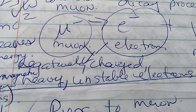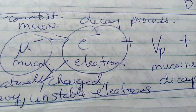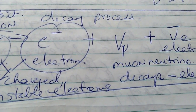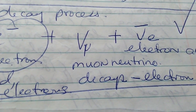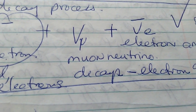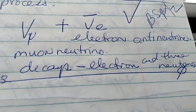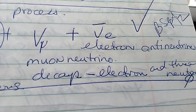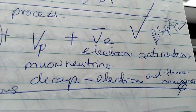Negatively charged, heavy, unstable electrons. And it goes to the VU, which is the muon neutrino, and the V electron anti-neutrino. And it decays to an electron and three neutrinos.